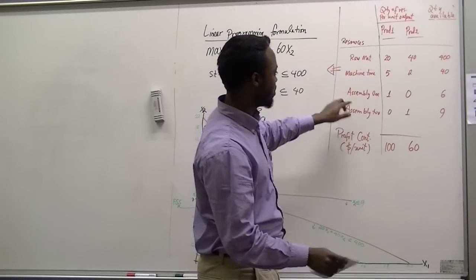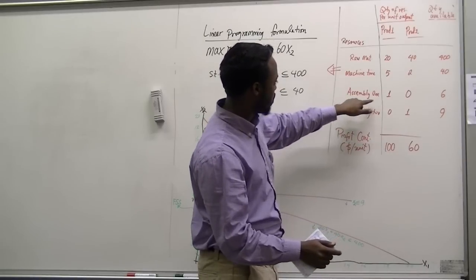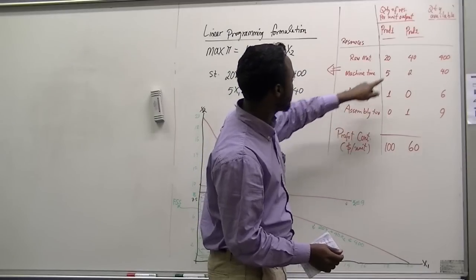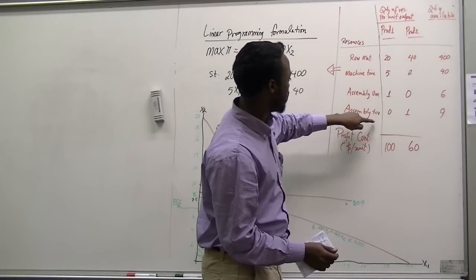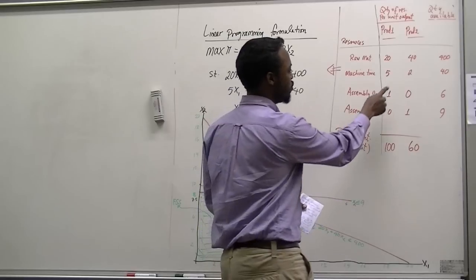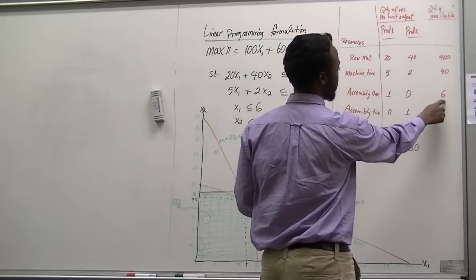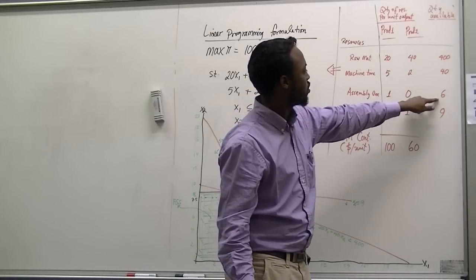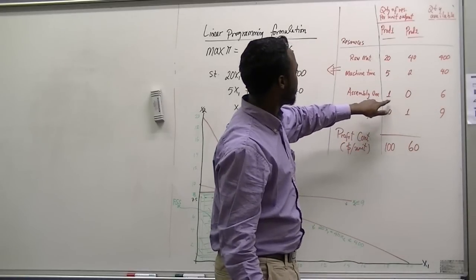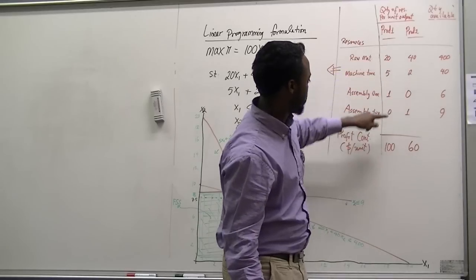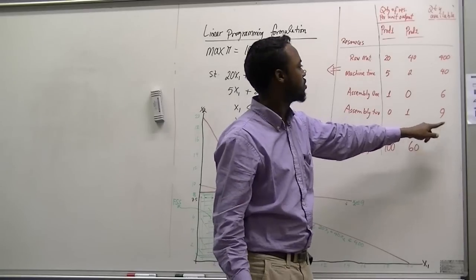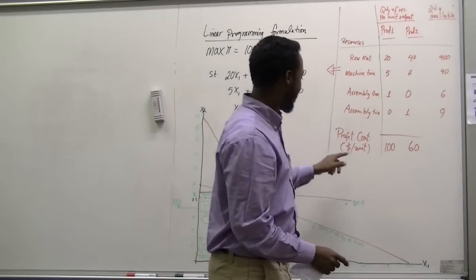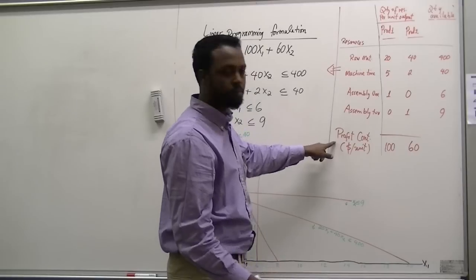The company has two assemblies. The two products are initially processed and then sent to separate assemblies — Product 1 is sent to Assembly 1 and Product 2 is sent to Assembly 2. The capacity of each assembly is limited: Assembly 1 can handle only six units of Product 1, whereas Assembly 2 can handle only nine units.